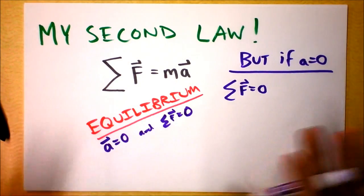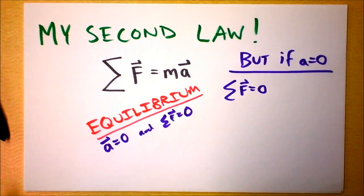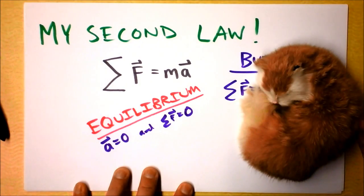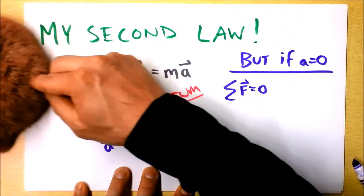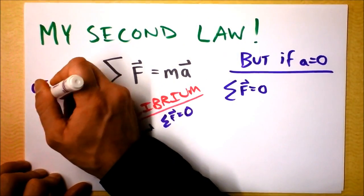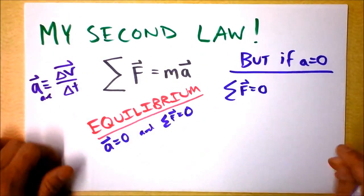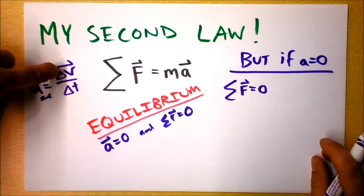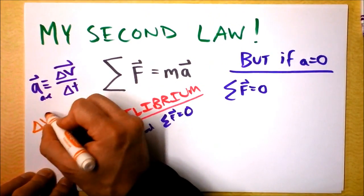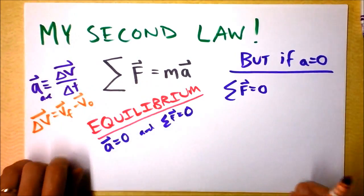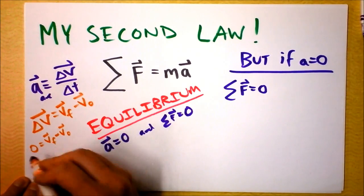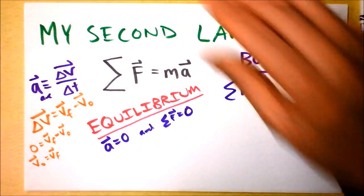But if acceleration is zero — let's say you're not accelerating — that means that you could be still, like this cat just sitting there. It also could mean that the cat is moving steadily in one direction at a constant speed. Because average acceleration is delta v divided by delta t, if acceleration is zero, then delta v must be zero. If delta v is zero, it doesn't mean that v is zero, because delta v is v final minus v initial. So zero equals v final minus v initial, which means v initial equals v final — velocity is steady.